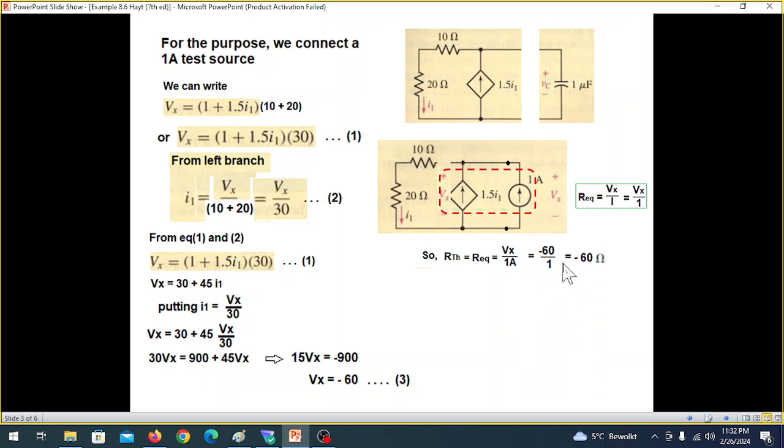Now we need to find R Thevenin or R equivalent, which we have discussed here. It is Vx over 1 ampere and Vx is minus 60, minus 60 over 1. And therefore, the equivalent resistance is minus 60 ohm. Don't worry even if the resistance is minus 60.